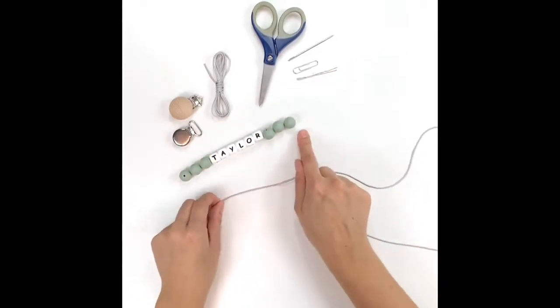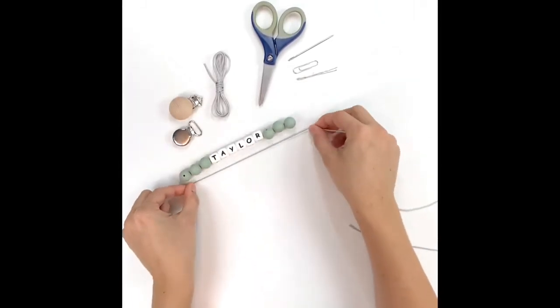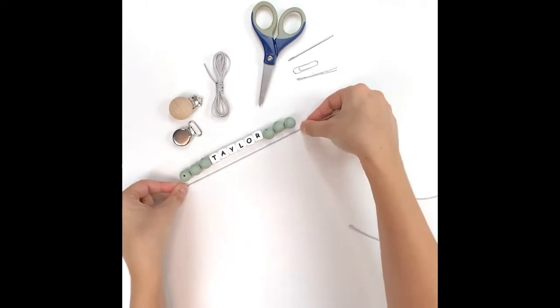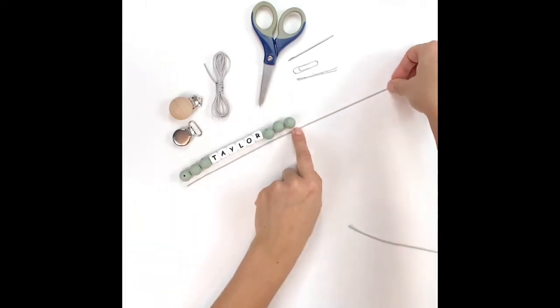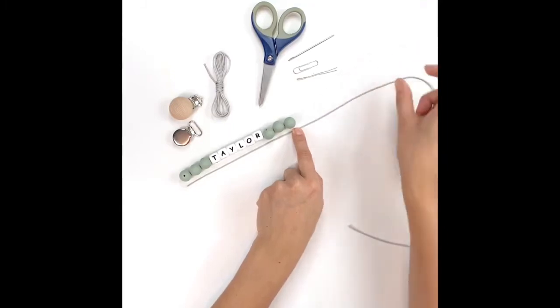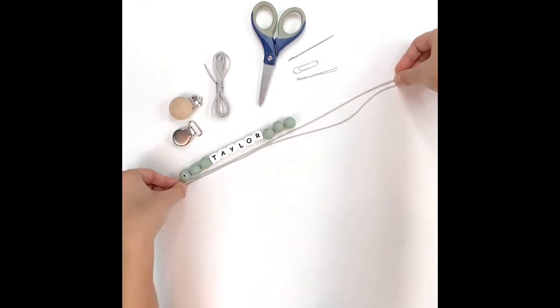Then you're going to take some nylon cord and you're going to want to measure it beside the beads and then a little bit further up. The reason you want to do that is you're going to make space for your loop and all the way back down.